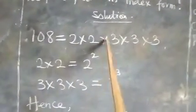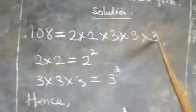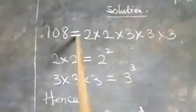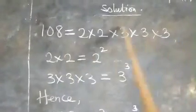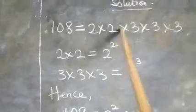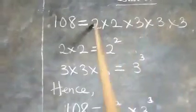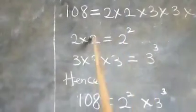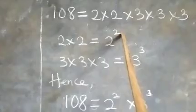2 times 2 times 3 times 3 times 3, that is the prime factor of 108. Now let's take them one by one. Look at this: 2 times 2, that's all we have here. 2 times 2 means 2 raised to the power 2.